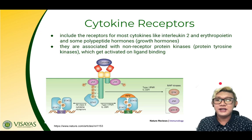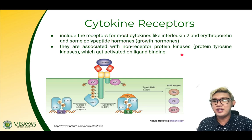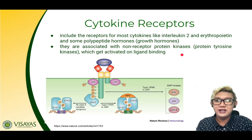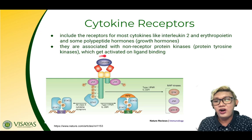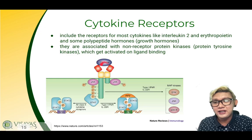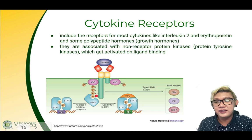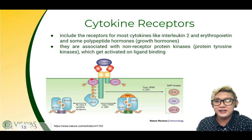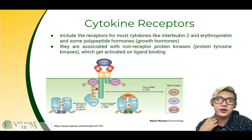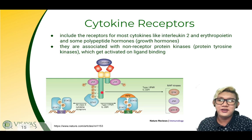Cytokine receptors include receptors for most cytokines, like interleukin-2 and erythropoietin, and some polypeptide hormones like growth hormone. They are associated with non-receptor protein tyrosine kinases, which get activated on ligand binding. Here you have a receptor with a cytokine ligand, and the tyrosine residues — these are the non-receptor protein tyrosine kinases — are associated with the cytokine receptors.